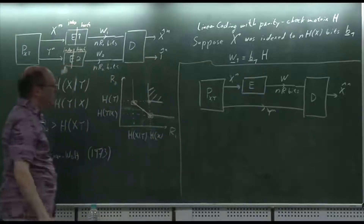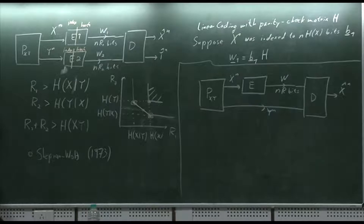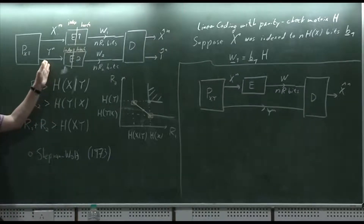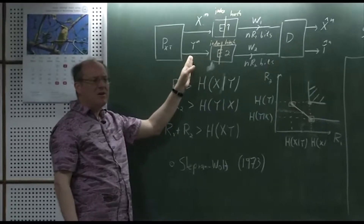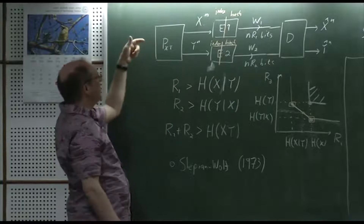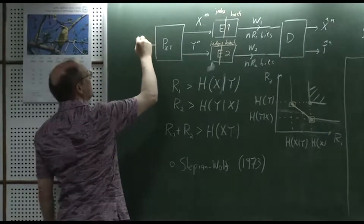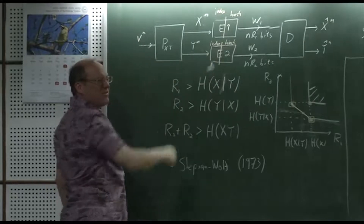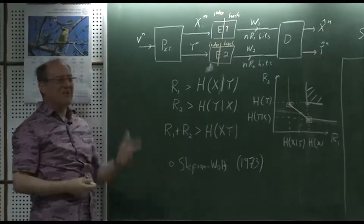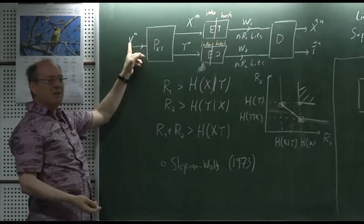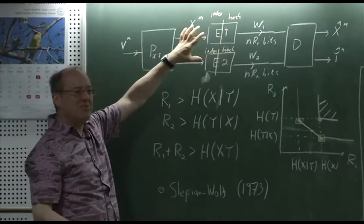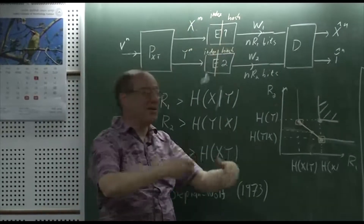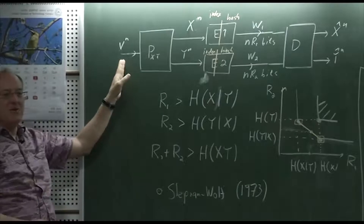When there are distortions, the region is still unsolved in general. It is solved when both sources are Gaussian — a relatively recent result from around 2008. There's also the CEO problem, where X and Y are noisy versions of some common V, and we want to reconstruct V at the receiver. This was solved for the Gaussian case about 12 years ago by Oohama, and then work at Berkeley with Aaron Wagner also contributed.